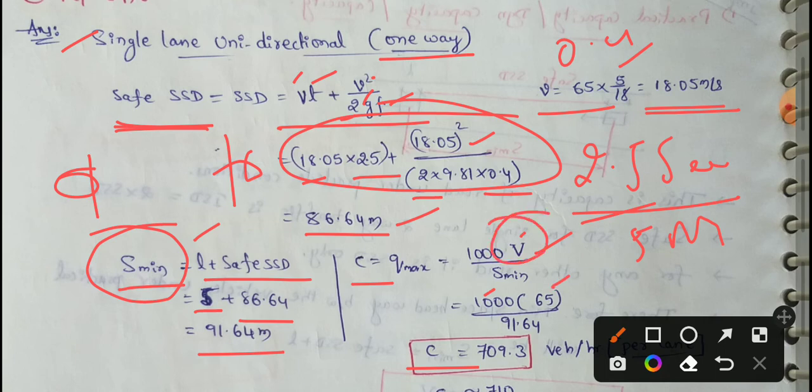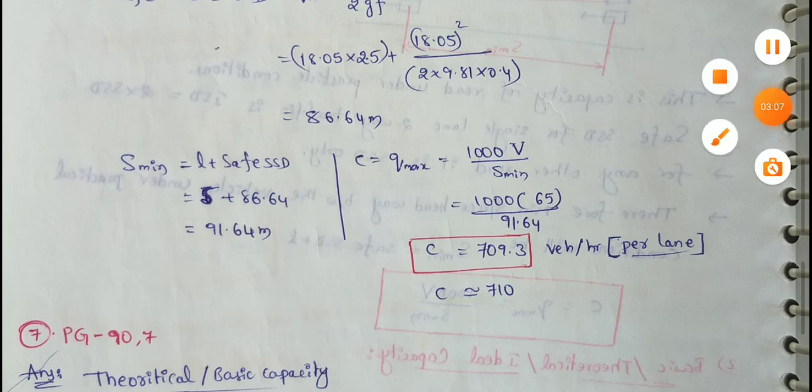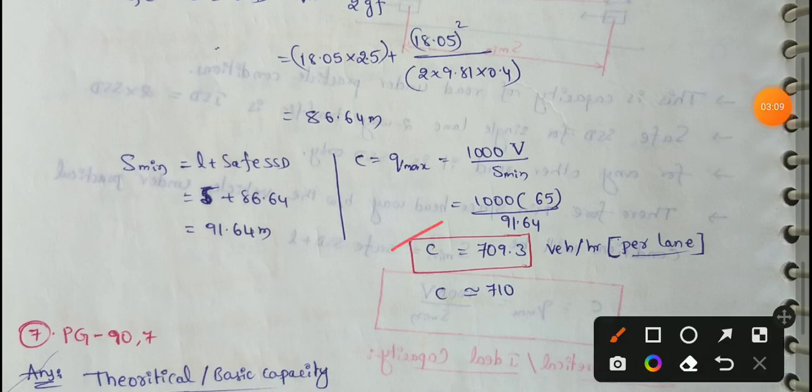It is capital V. Design speed is 65 km per hour. 1000 times 65 by 91.64. This minimum value is 91.64. My answer is approximately 710 vehicles per hour.